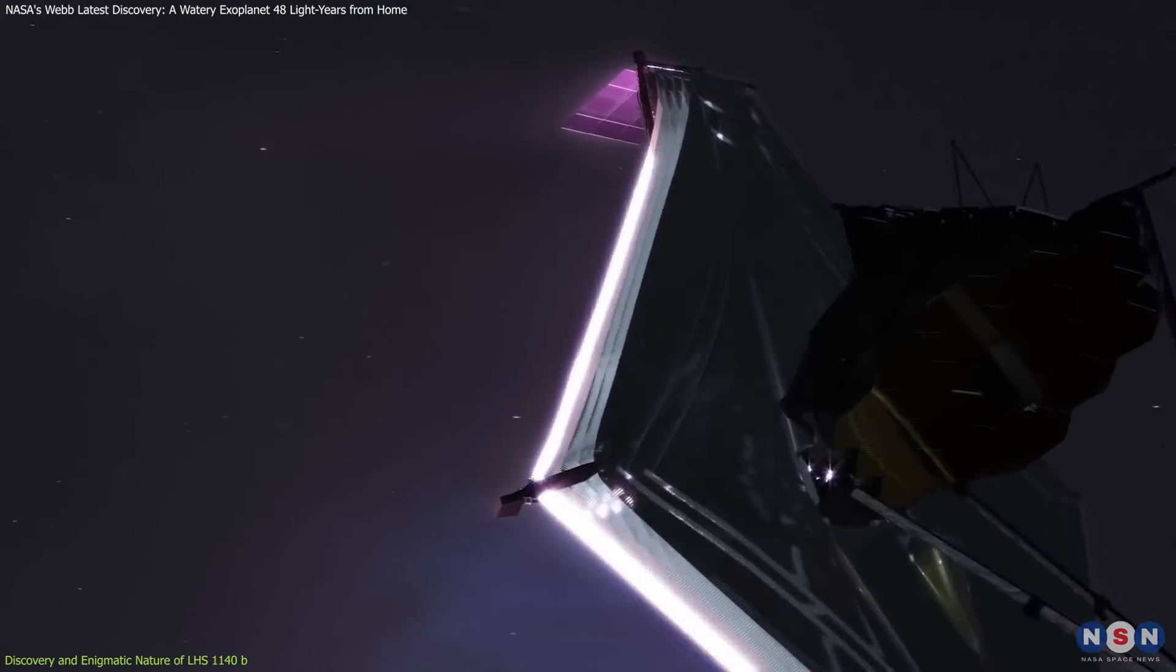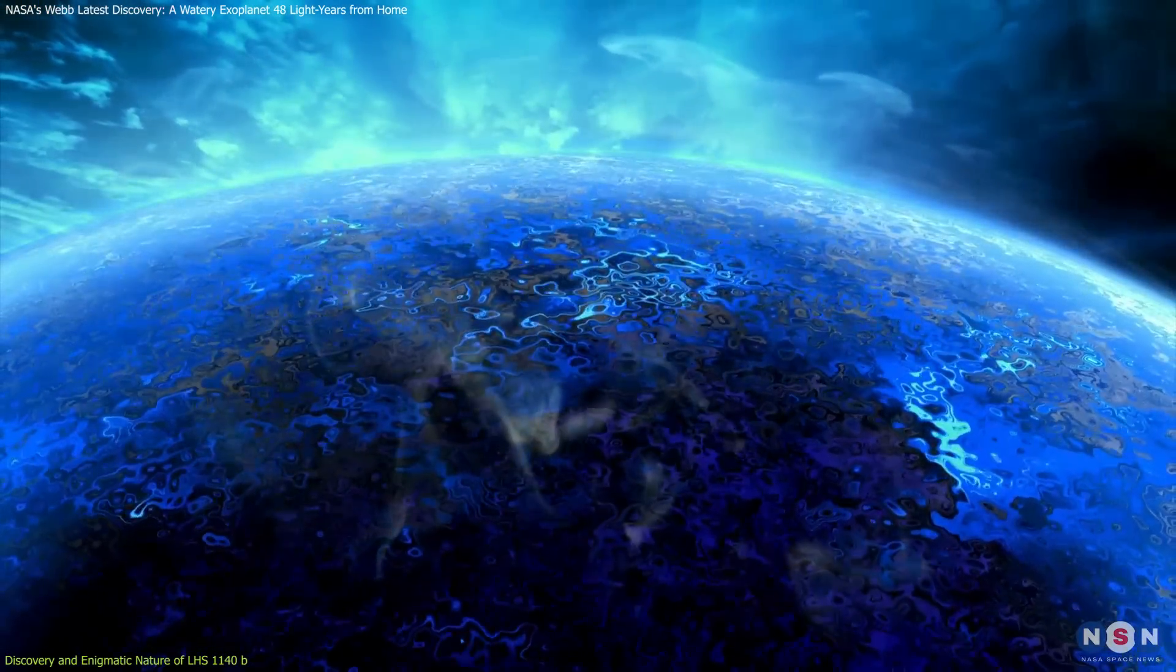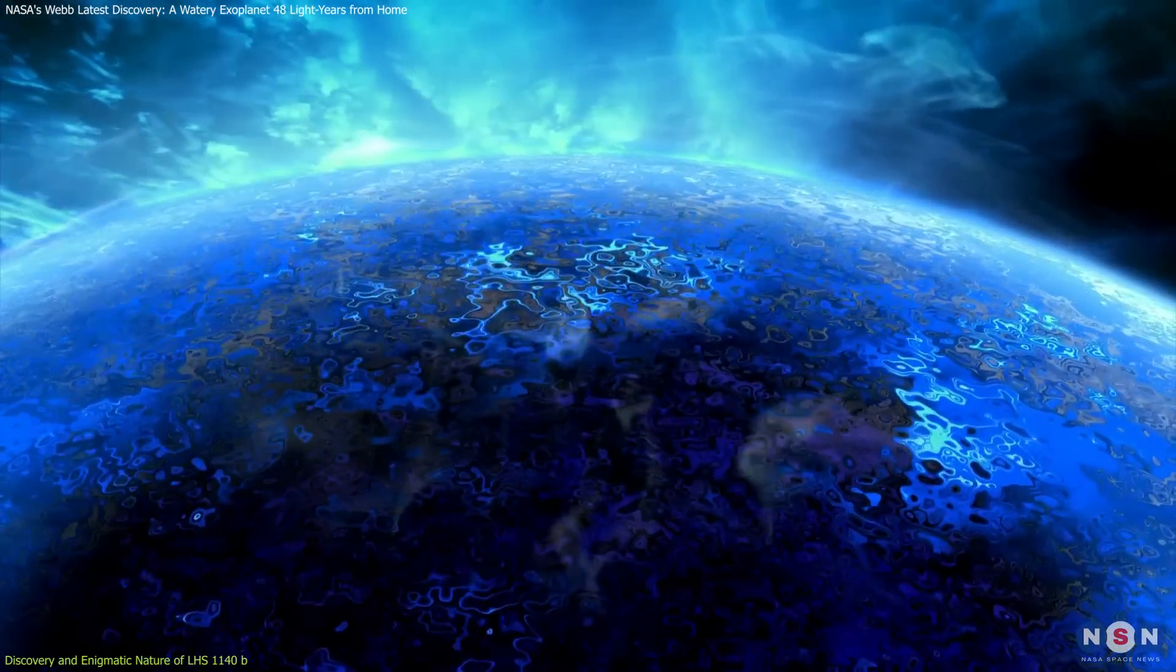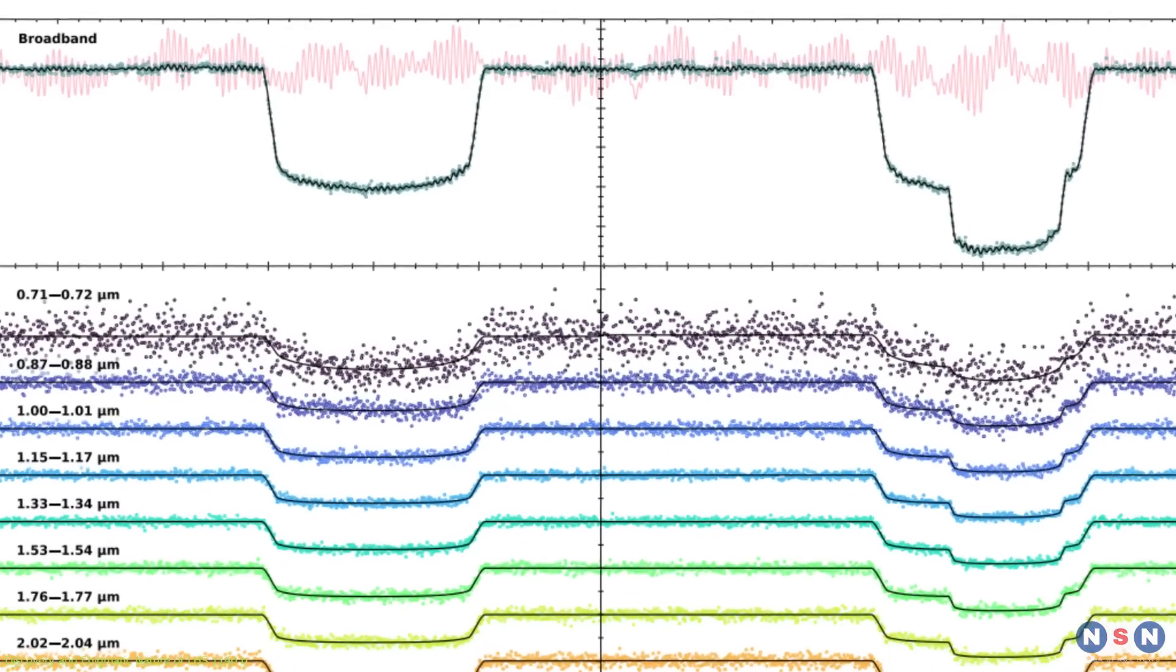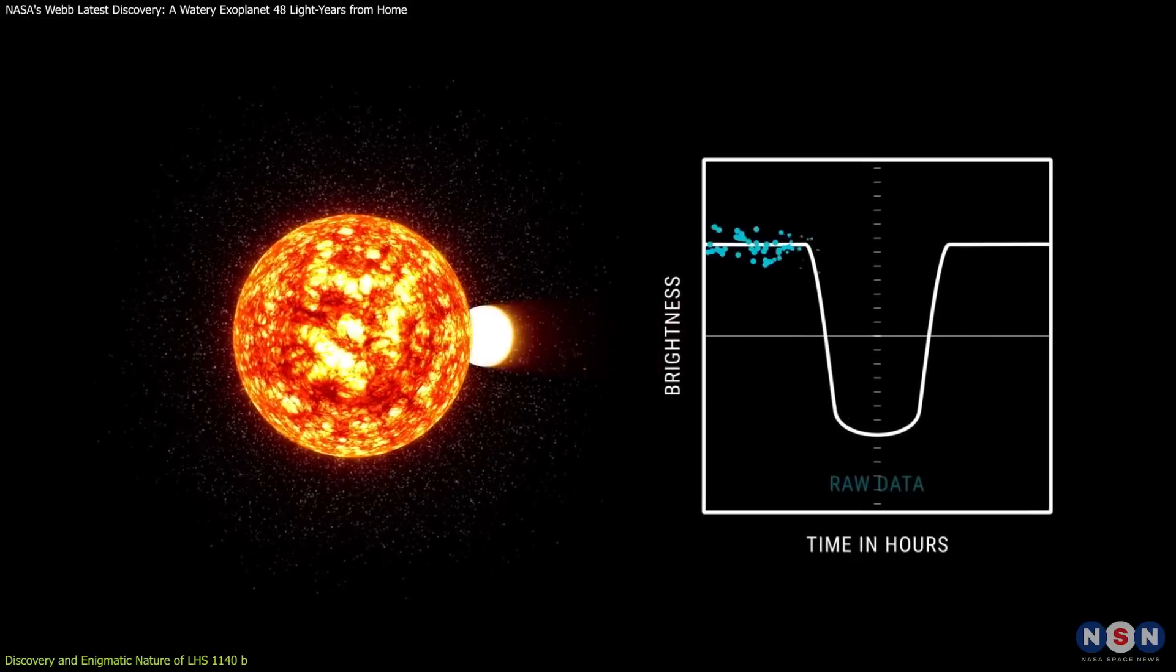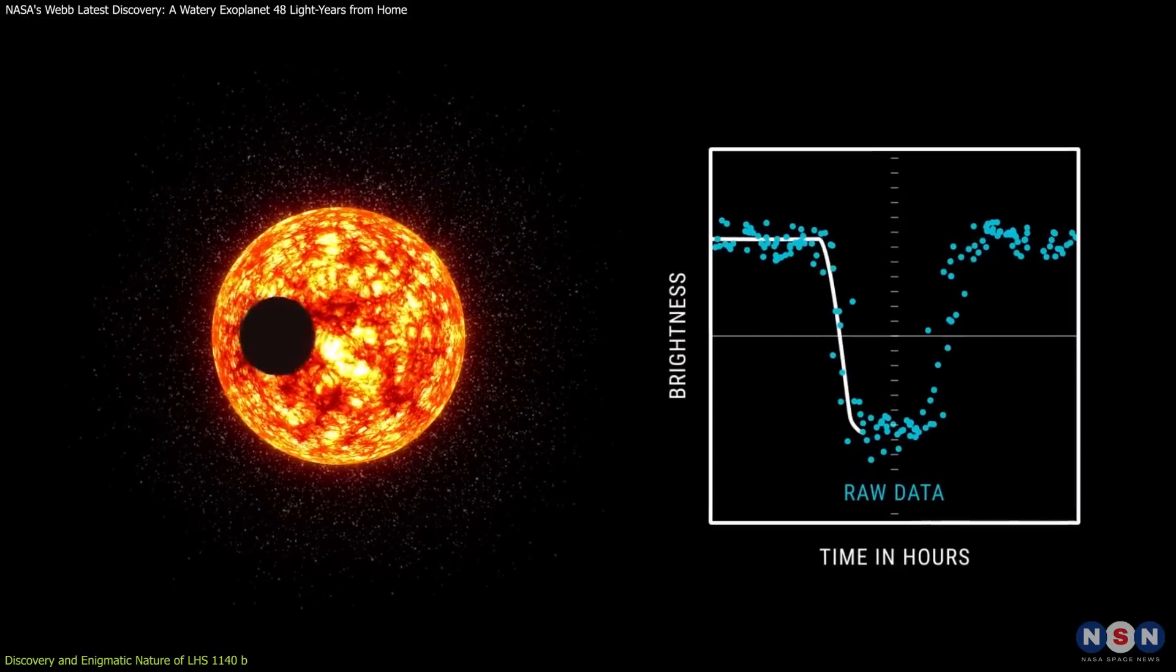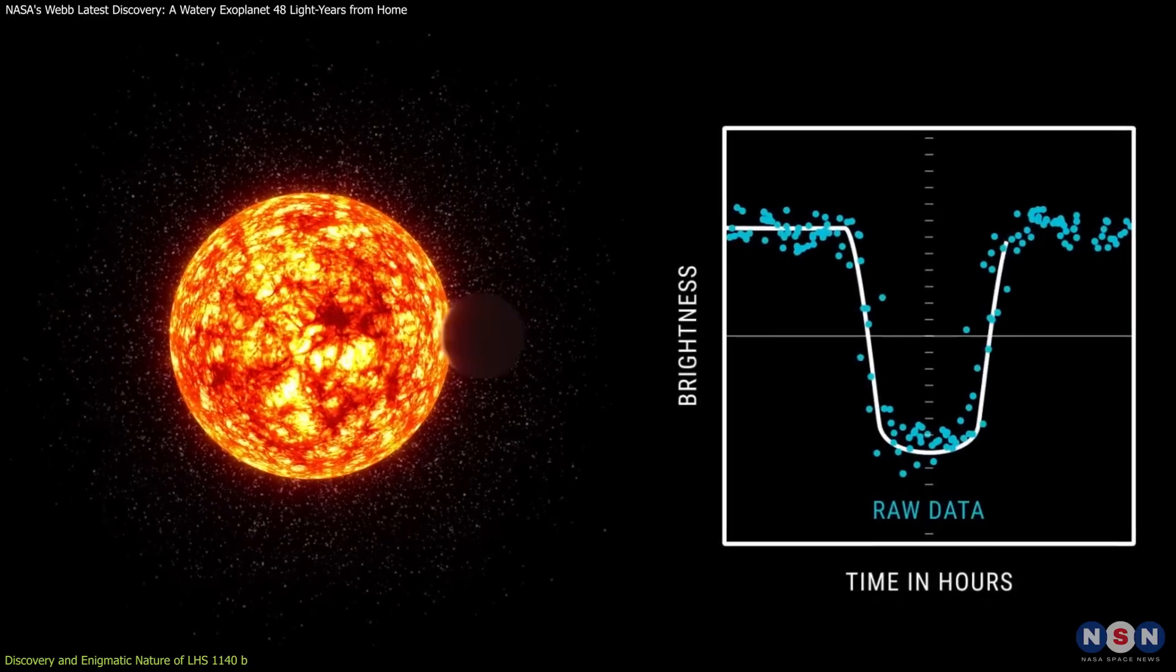The new data collected by Webb strongly points towards this exoplanet being more of an icy, potentially watery world rather than a gas giant. This revelation comes from a detailed analysis of the planet's transit across its host star, which allows scientists to examine the backlight from the star filtered through the planet's atmosphere, a technique known as transmission spectroscopy.